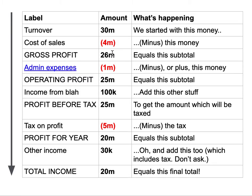So 30 minus 4 million gives us a subtotal of 26 million. Gross profit is essentially the profit that the company makes after the cost of sales is taken away, but before other expenses. The first of those expenses is administrative expenses — here again we have a figure taken away — and that gives us what's called the operating profit. So 26 million minus 1 million is 25 million. We might then have some small amounts of income from other parts of the business, and eventually we end up with profit before tax. Then we get the tax.